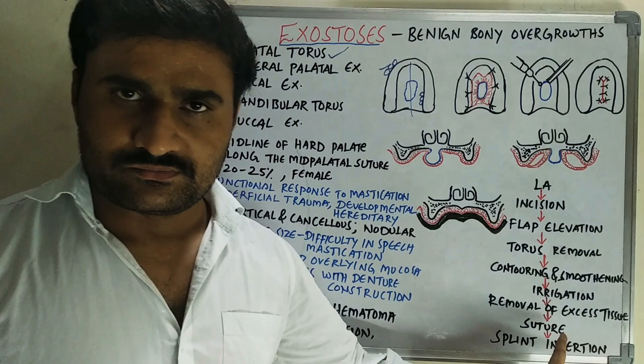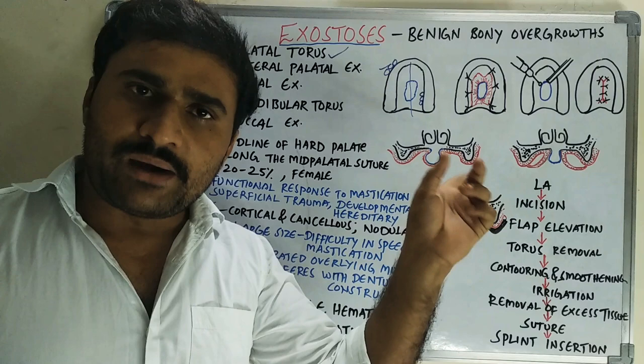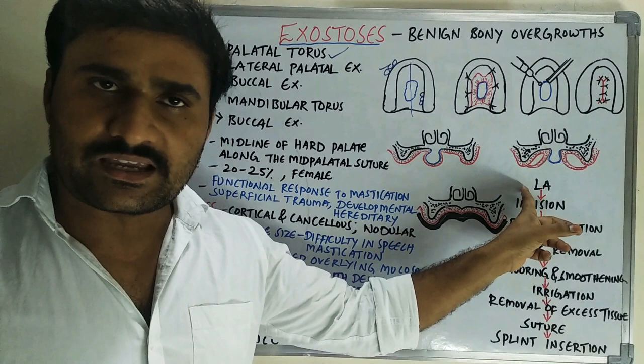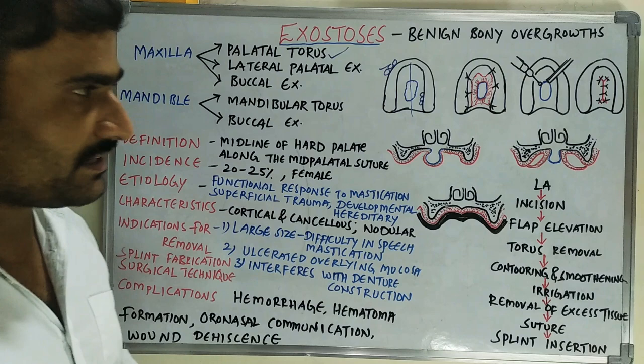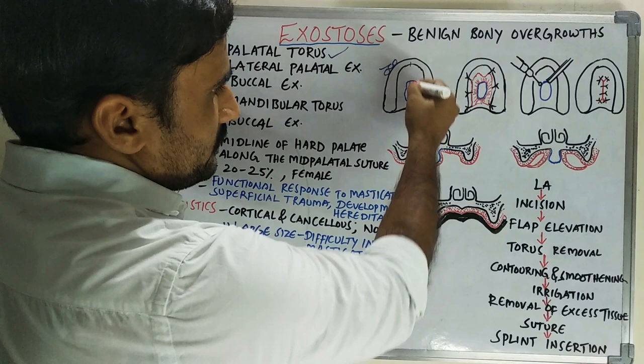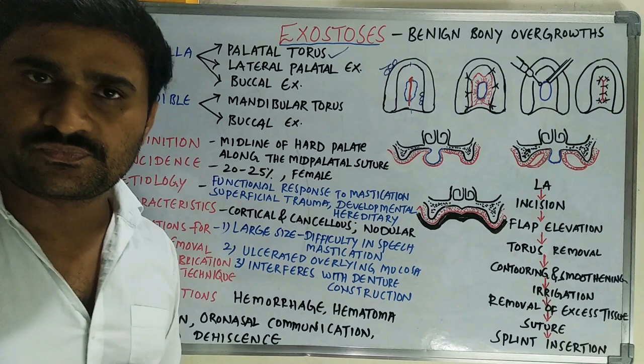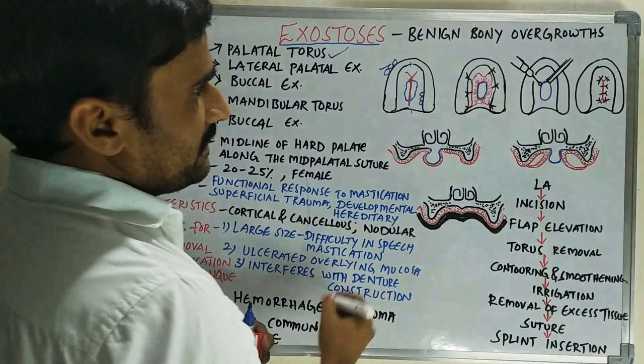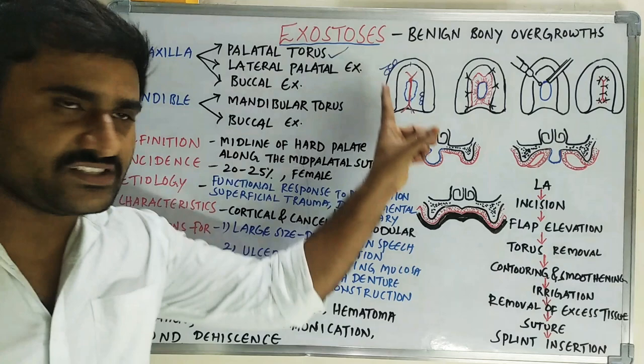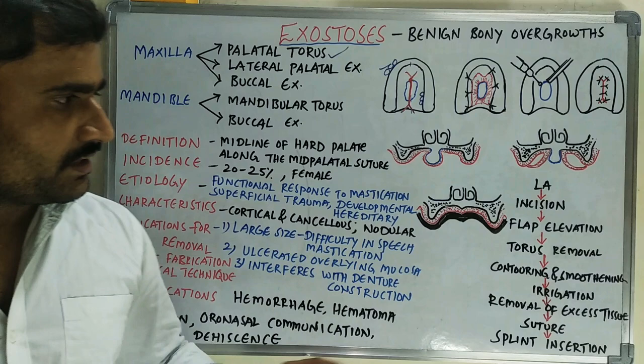For the surgical technique: first we have to do local anesthesia. For palatal torus removal, you have to give bilateral greater palatal nerve blocks along with the nasopalatine nerve block. For the incision, we will take a midline incision along with anterior and posterior releasing incisions.